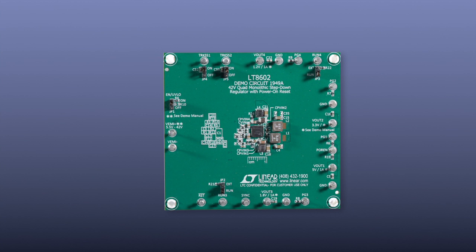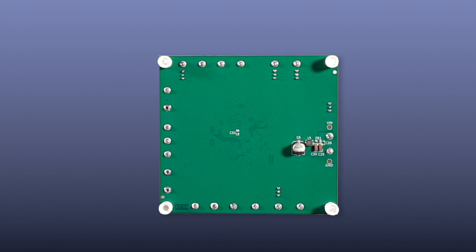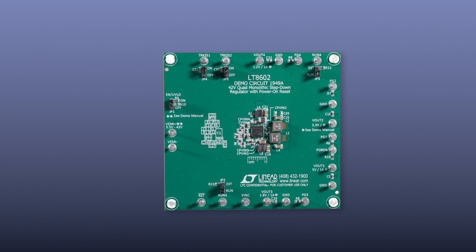These are all the components necessary for four buck regulators using the LT8602. There are no components on the backside of the board. This complete solution occupies only four square centimeters of board area.